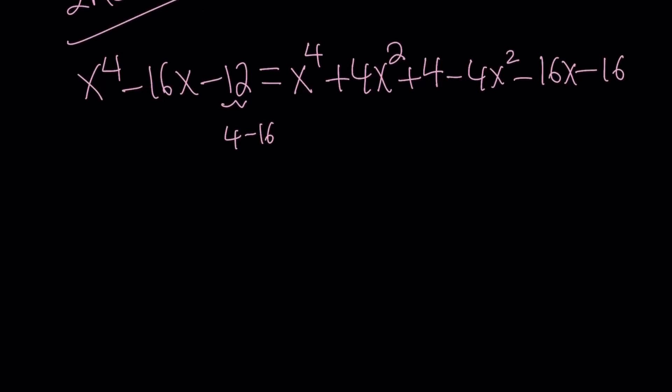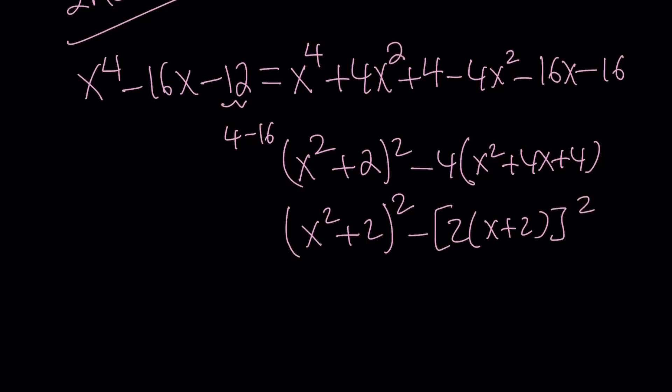From here we get something nice. This is x squared plus 2 quantity squared, and this is 4 minus 4 times x squared plus 4x plus 4, which is another perfect square. So now this can be written as x squared plus 2 squared minus 2 times x plus 2, and the whole thing is squared.